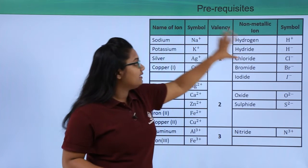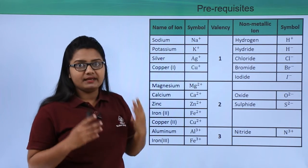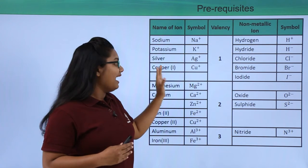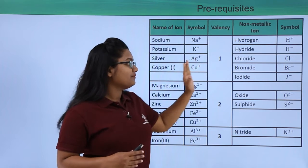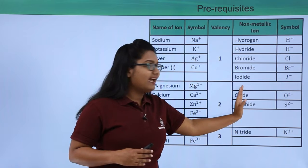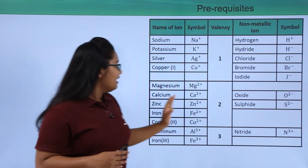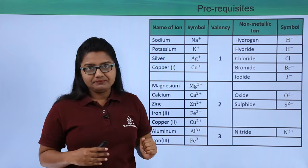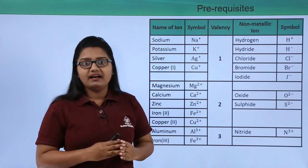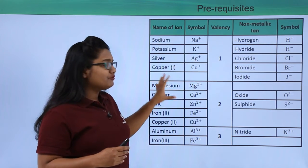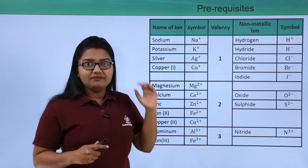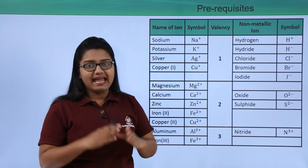Here is a table that has to be remembered in order to write a chemical formula. This table shows the names of ions, their symbols, and their valencies. It includes both non-metallic ions and metallic ions. We will use this table to write the chemical formula of magnesium chloride by finding magnesium and chlorine and identifying their symbols and valencies.